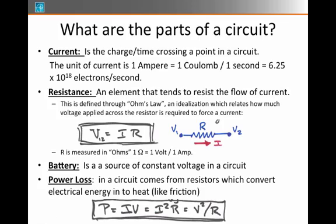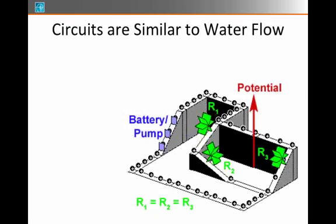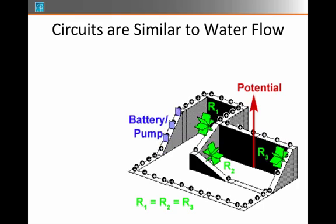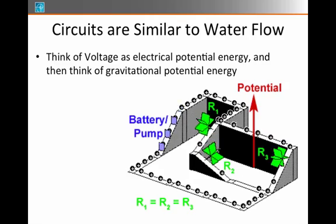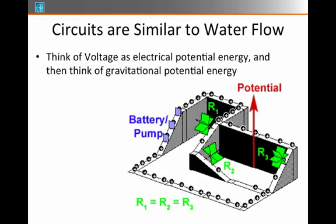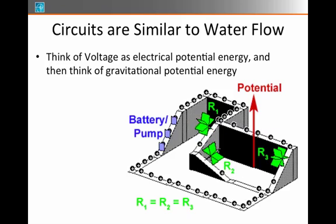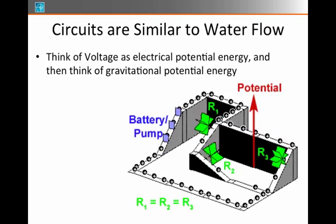You can think of a circuit as something like a water flow across a long path. Think of the voltage itself as like electrical potential energy, and then as you're thinking about this little racetrack here, think about gravitational potential energy being similar to electrical potential energy. Electrical current is like water flow on my little path or my little racetrack here.